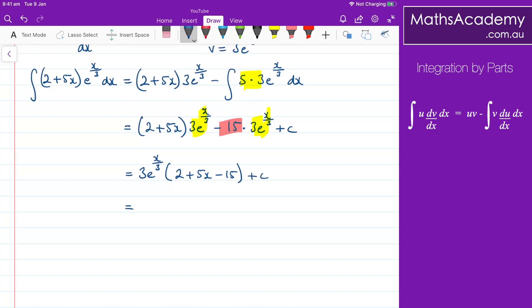And just a little bit of tidying up here: I've got the 3e to the x over 3, the 2 and the negative 15 will give me a negative 13, so I've got 5x minus 13, and then just add on that constant of integration.